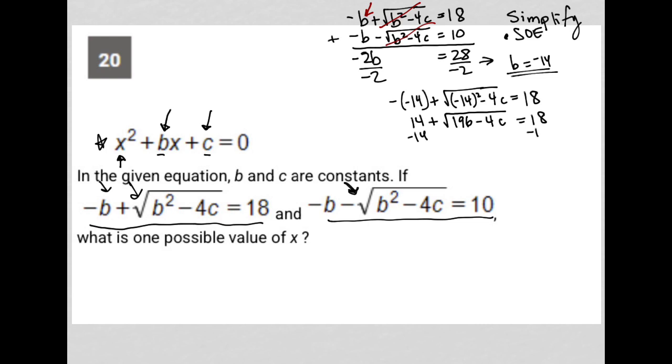Subtract 14 from both sides. I'm left with √(196 - 4c) = 4. The next step in simplification would be to square both sides to get rid of the radical. So the radical is now gone. I just have 196 - 4c = 16.